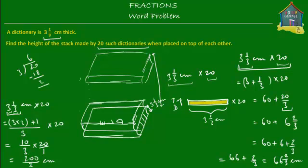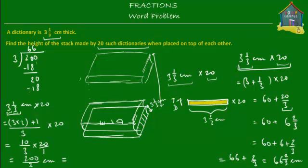That's the height of the stack, but 200/3 doesn't make much sense as an improper fraction. So let's convert this to a mixed fraction. You divide the numerator 200 by the denominator 3 — 200 divided by 3 gives you 66 with a remainder of 2. So 200/3 is equal to 66 and 2/3, where the 2 is the remainder and the 3 is the denominator. So 200/3 centimeters is really equal to 66 and 2/3 centimeters.